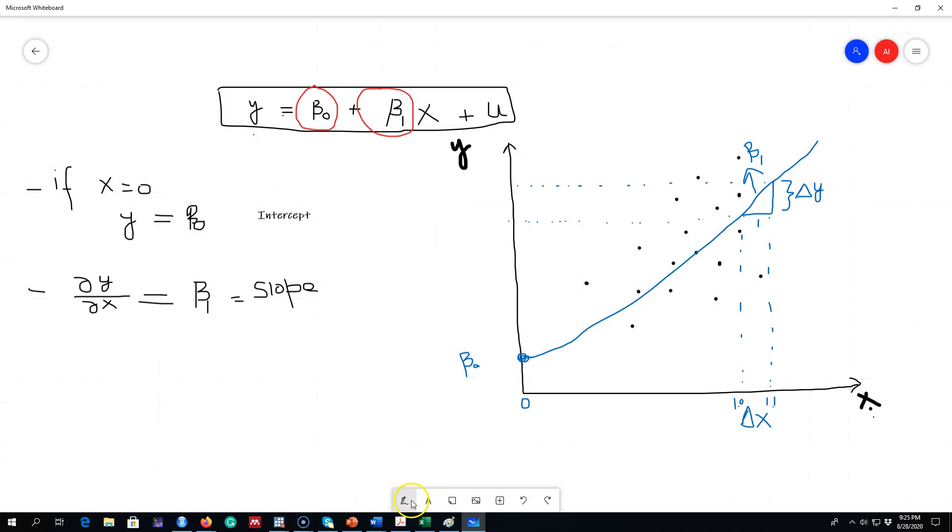After we have that, we can get the fitted values of this Y variable by plugging in those X variables. For example, we may have beta_0 is 1.01 and beta_1 is 2. Then we can keep on plugging the value of X variables, say this is the value of X is x1, and we can get a fitted value.